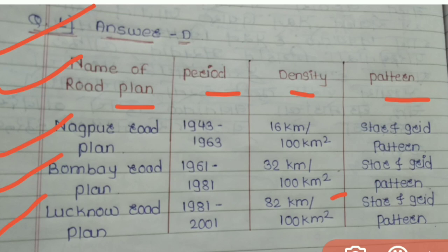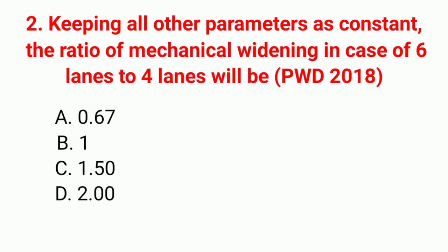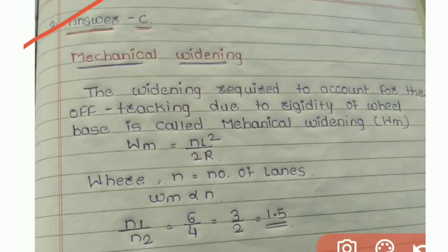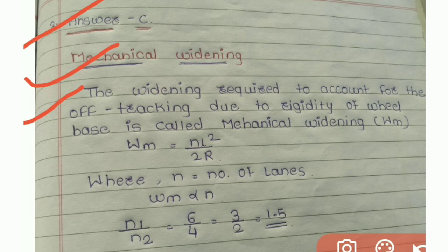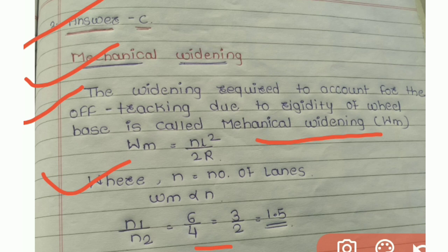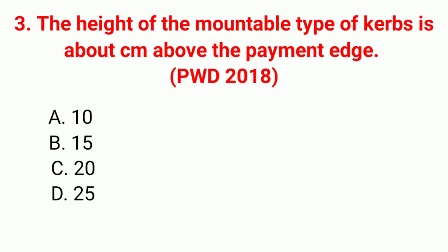Lucknow road plan: period 1981–2001, density 82 km per 100 km², star and grid pattern. Question 2: Keeping all other parameters constant, the ratio of mechanical widening for six lanes to four lanes is — correct answer option C: 1.50. Formula: WM = NL²/2R. Ratio N1/N2 = 6/4 = 3/2 = 1.5.